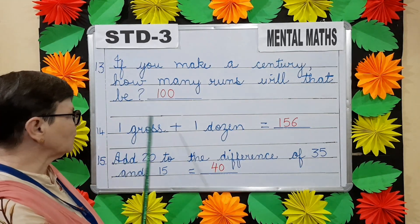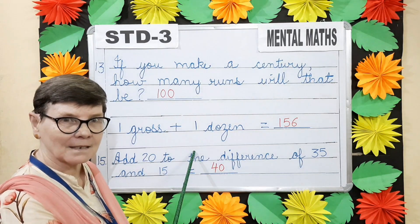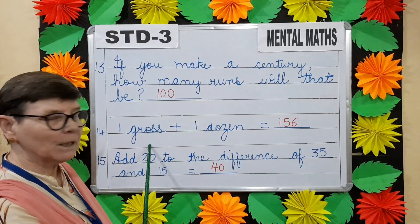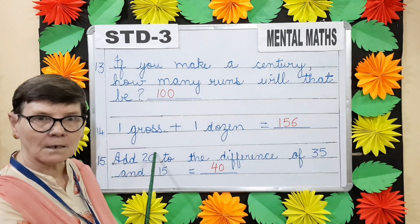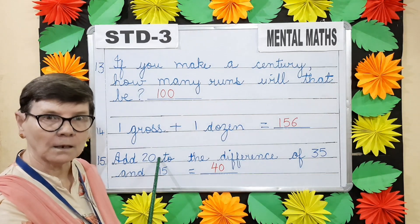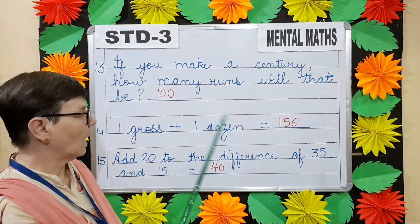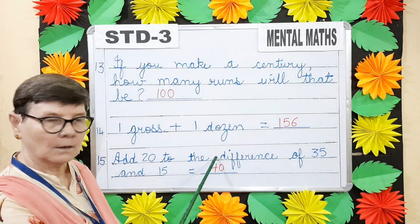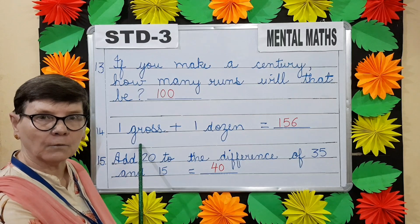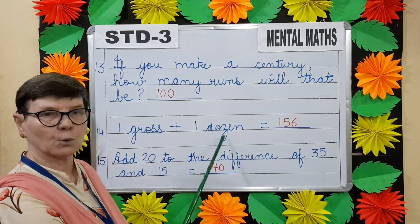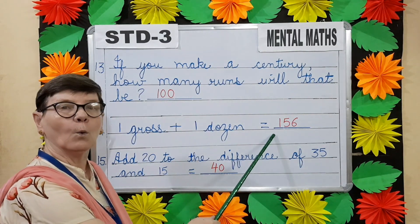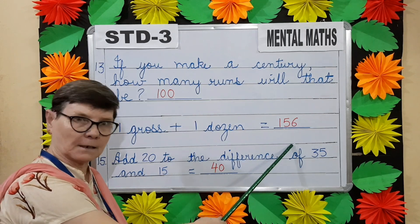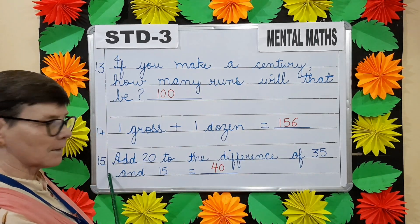Question number fourteen. One gross plus one dozen. How many units in one gross? One hundred and forty-four. How many units in one dozen? Twelve. So one hundred and forty-four plus twelve will give you one hundred and fifty-six.